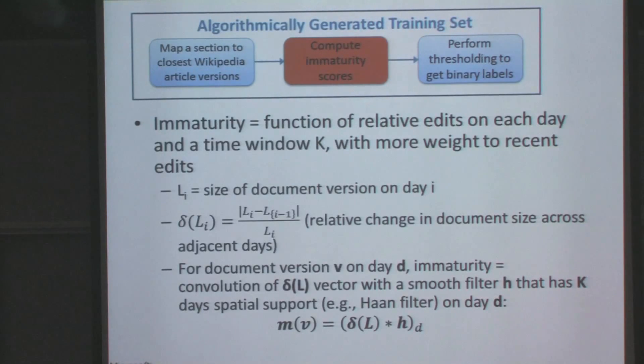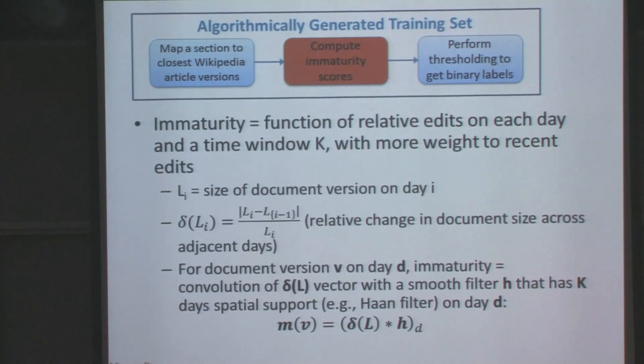To quantify this, we define immaturity as a function of the relative edits on each day within a time window, giving more weight to more recent edits. We look at a vector of the relative changes in document size across a window of k days and convolve it with a smoothing filter — like a Hann filter — so that it gives more weight to more recent edits. This is how we get the immaturity of Wikipedia article versions.